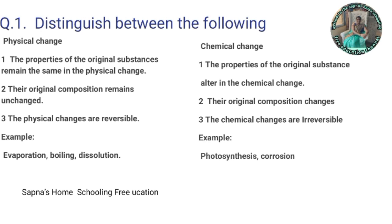In a physical change, the properties of the original substances remain the same and the original composition remains unchanged. Physical changes are reversible. In a chemical change, the properties of the original substances alter, the original composition changes, and chemical changes are irreversible. For example, photosynthesis and corrosion.